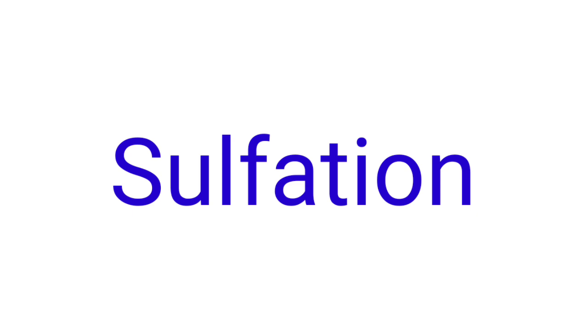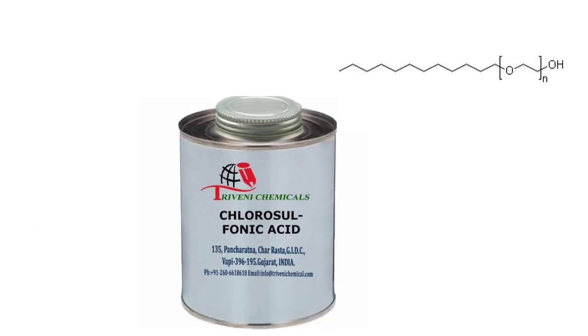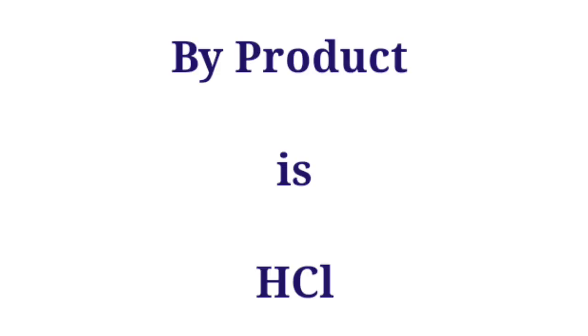In number one, sulfation, initially the lauryl ethoxylate is batch sulfated by chlorosulfonic acid. Both reagents are fed to a glass-lined stirred jacketed reactor, with the acid being gradually added to the reaction. The sulfation is carried out at 25 to 30 degrees under vacuum over a period of about 2.5 hours. The gaseous HCl byproduct is led off the sulfation product and directed to a scrubber downstream.